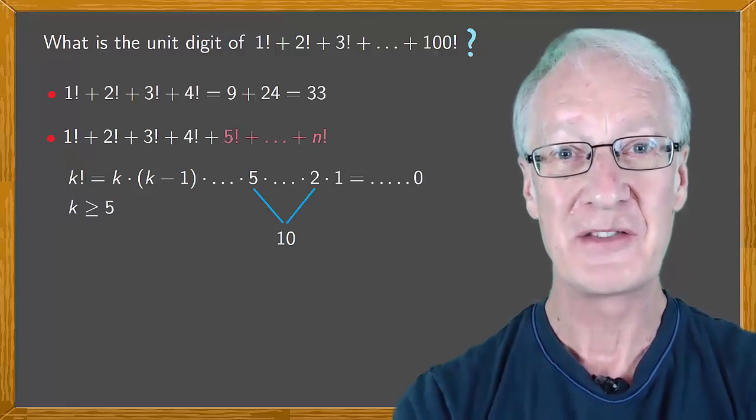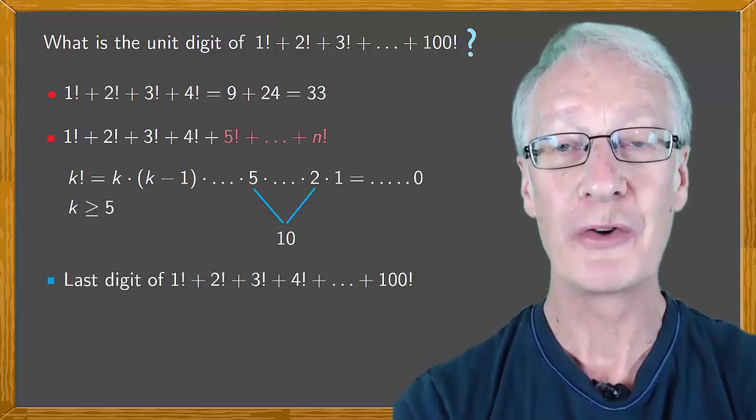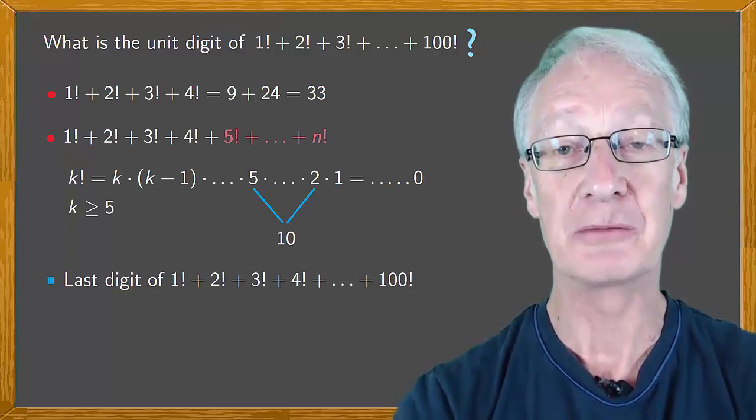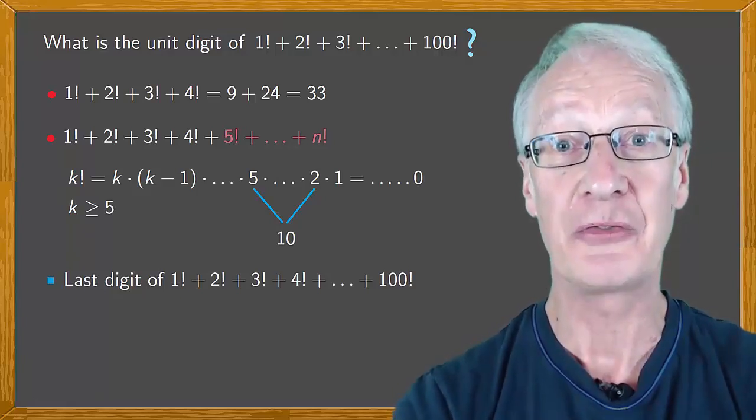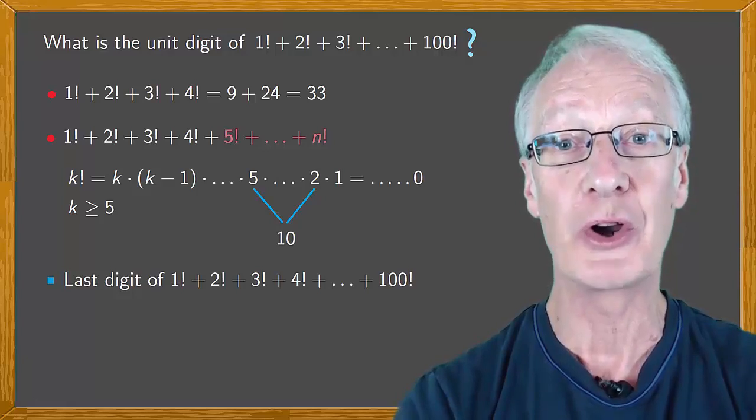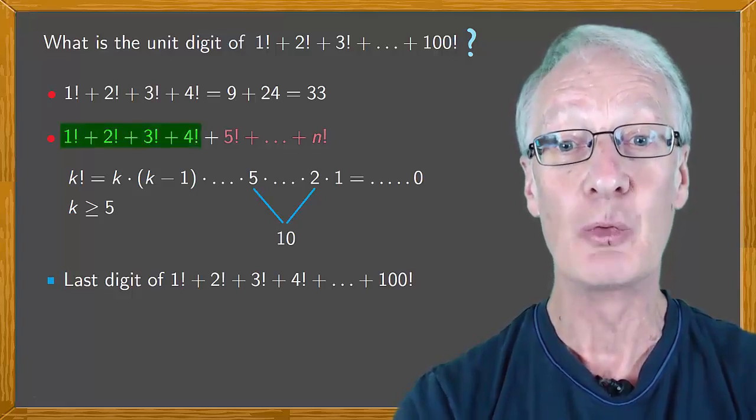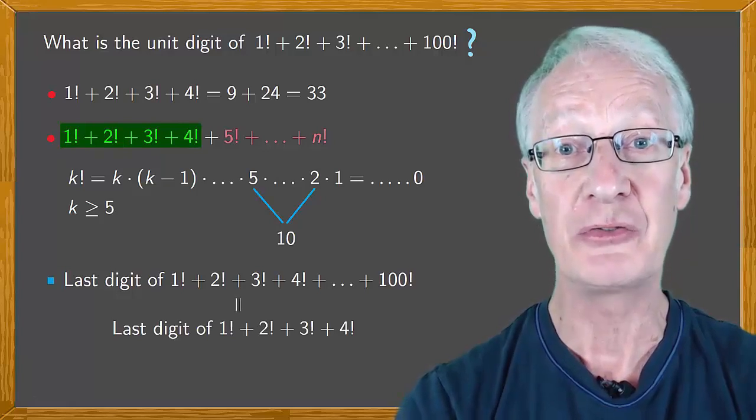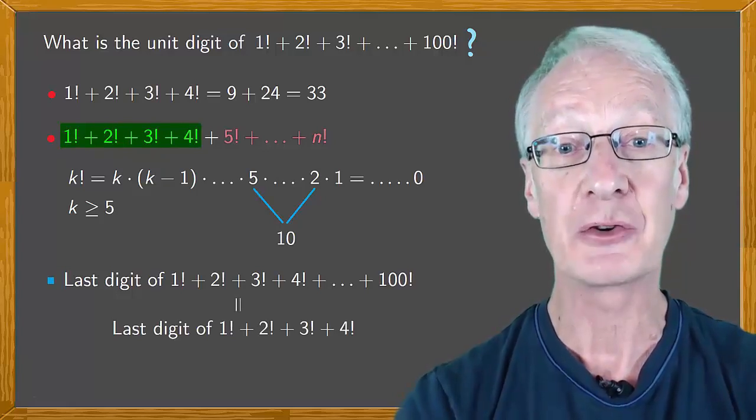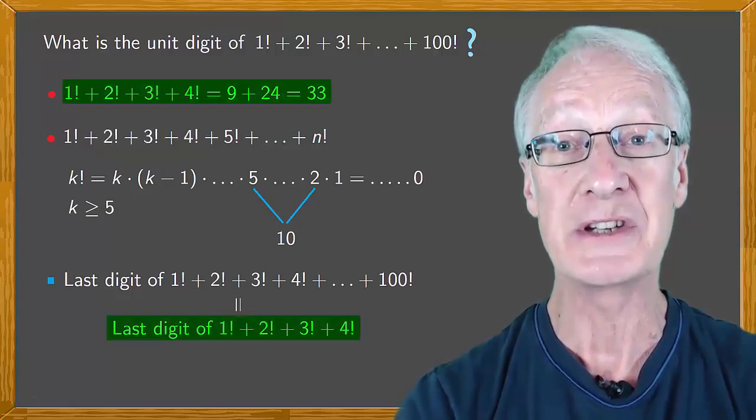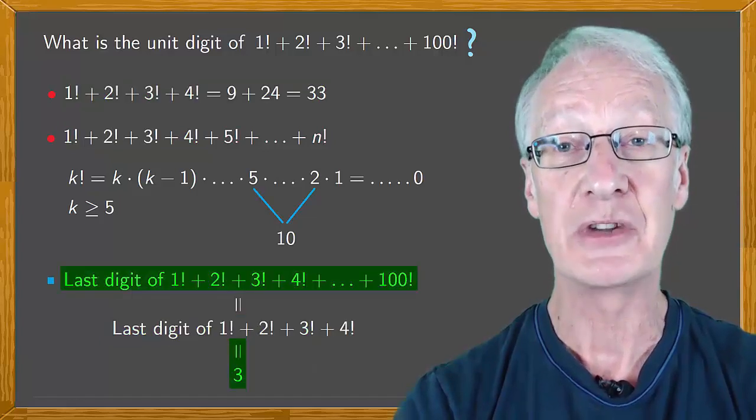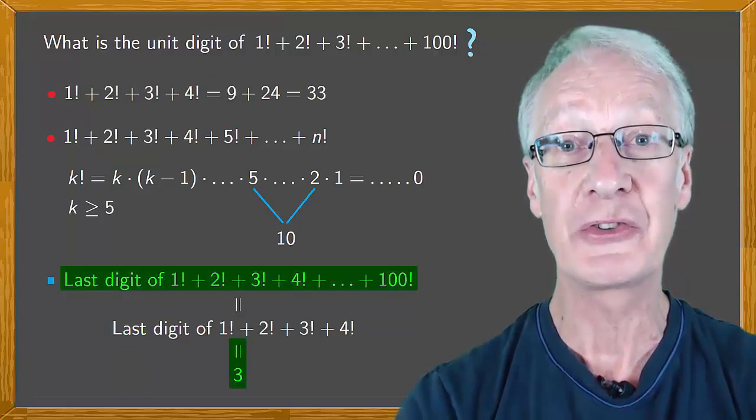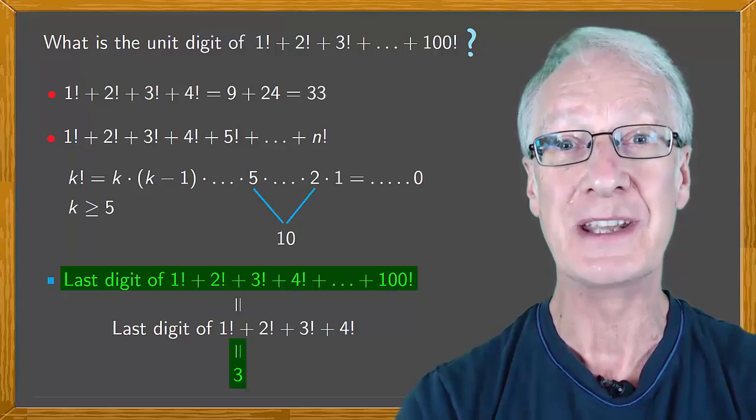So the last digit of 1! + 2! + 3! + 4! all the way up to 100! will be the same as 1! + 2! + 3! + 4! which is 3. So the unit digit of the whole sum will also be 3.